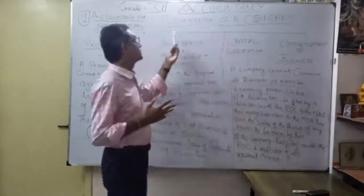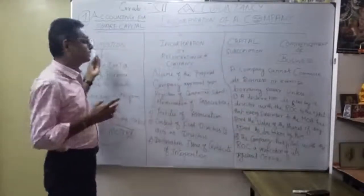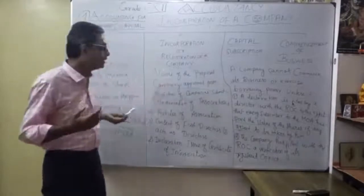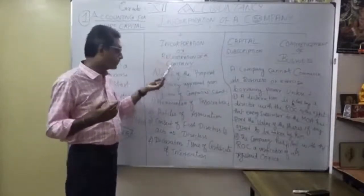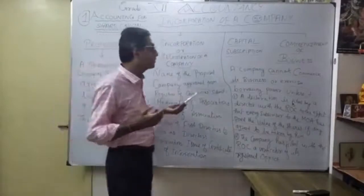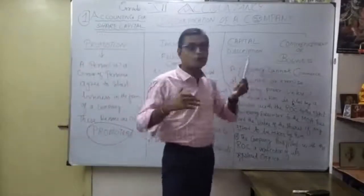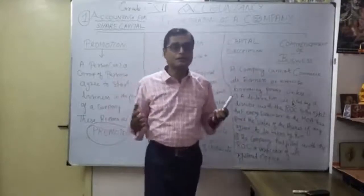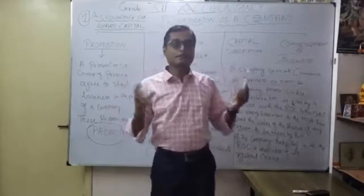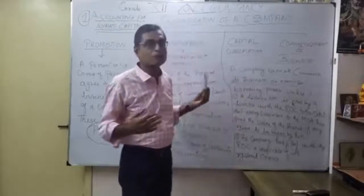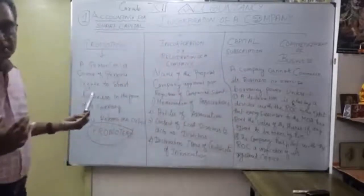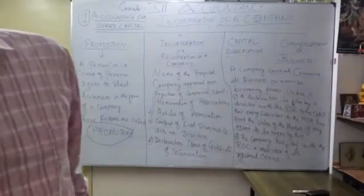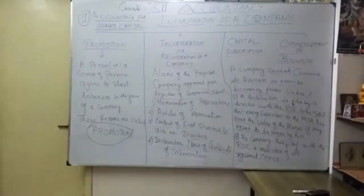So the incorporation of the company involves: promotion — who starts the business is called a promoter; incorporation with its four important points; then capital subscription; and commencement of business. Now we will discuss what is meant by a prospectus, minimum subscription, and preliminary expenses.